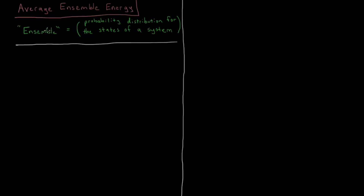I want to be clear about this ensemble that I keep talking about. One definition you might use for ensemble is just the probability distribution for all the different states that a system could occupy. There are all these different possible quantized energies you could have in your system, and the ensemble represents how the system is spread out between these different possible states at a given equilibrium situation.